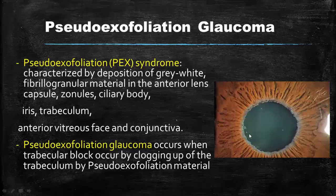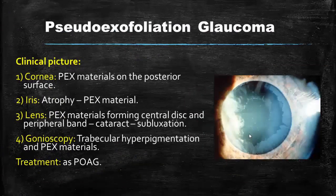Pseudoexfoliation glaucoma occurs when the trabecular meshwork is blocked by pseudoexfoliation material. Clinically, it can be diagnosed by examining the cornea — we can notice pseudoexfoliation material on the posterior surface of the cornea. At the iris, we can notice iris atrophy with pseudoexfoliation material, especially at the pupil margin. In the lens, we can see pseudoexfoliation material forming a central disc corresponding to the pupil when miotic, and a peripheral band visible when the pupil is dilated. It can be associated with cataract and lens subluxation due to weak zonules. By gonioscopy, we can see typical hyperpigmentation and pseudoexfoliation material. Treatment of pseudoexfoliation glaucoma is the same as for primary open angle glaucoma.